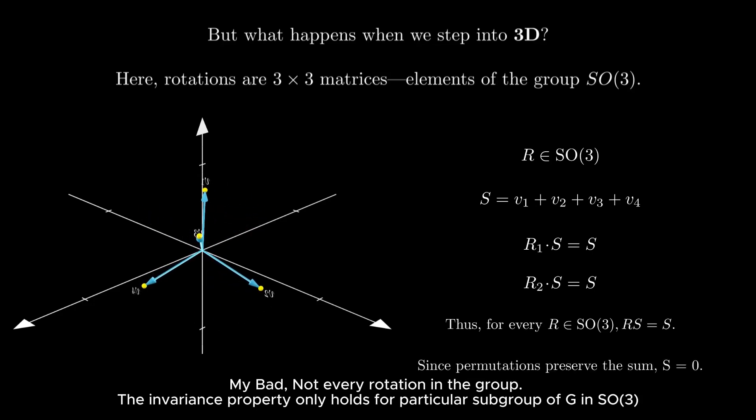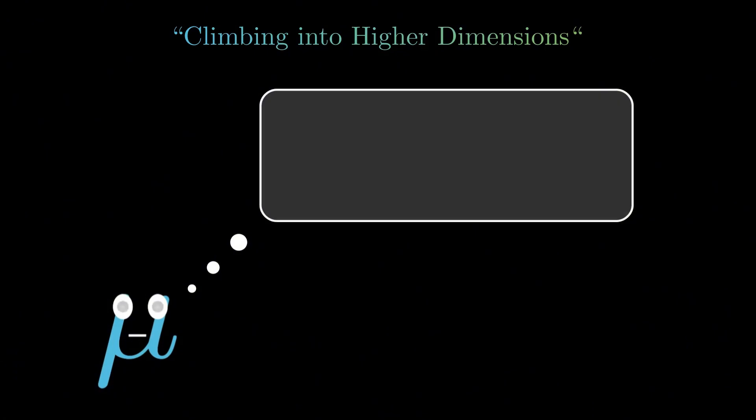And this idea doesn't stop in 3D. In fact, in any number of dimensions, rotations are represented by n×n matrices in a group SO(n). As long as your arrangement is symmetric enough - goes under a rich enough set of rotations - the exact same reasoning applies. To me, that's the beauty of this group theory argument. It's not just a trick with formulas. It's a deep property of symmetry itself.